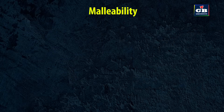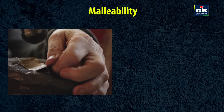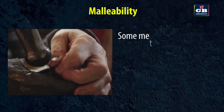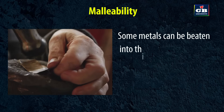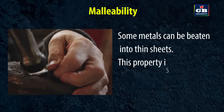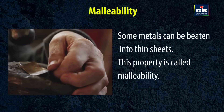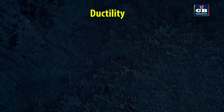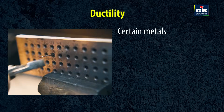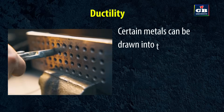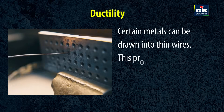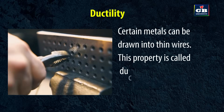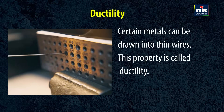Malleability: some metals can be beaten into thin sheets. This property is called malleability. Ductility: certain metals can be drawn into thin wires. This property is called ductility.